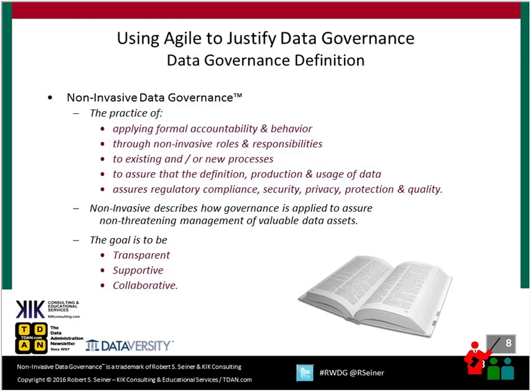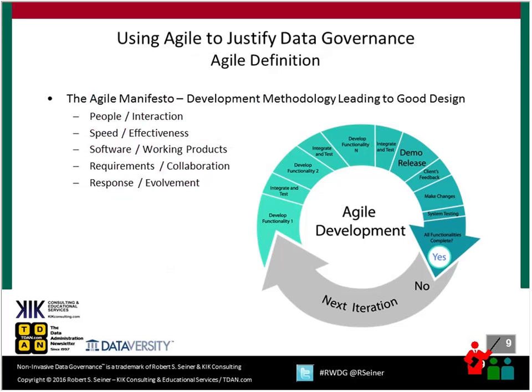We want to be transparent, supportive, and collaborative wherever we can when implementing governance across the organization. Now, a couple of descriptions of the Agile manifesto. It's a development methodology set up to lead to good data design. Five primary things I've found organizations focus on when taking the Agile approach: getting the right people involved in interaction, being speedy and effective in delivery, delivering working software products iteratively, collaborating on requirements, and being responsive in evolving the solution.